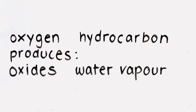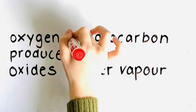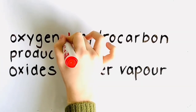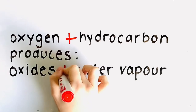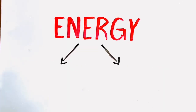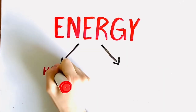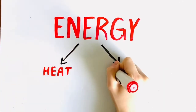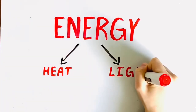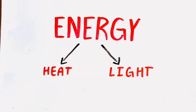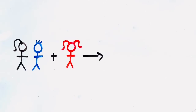A combustion reaction occurs when oxygen combines with a hydrocarbon to produce one or more oxides and water vapor. Combustion reactions release energy in the form of heat and light.